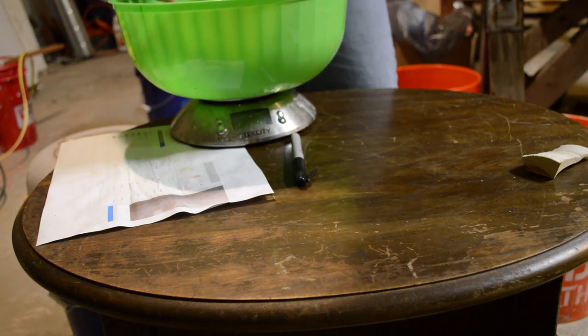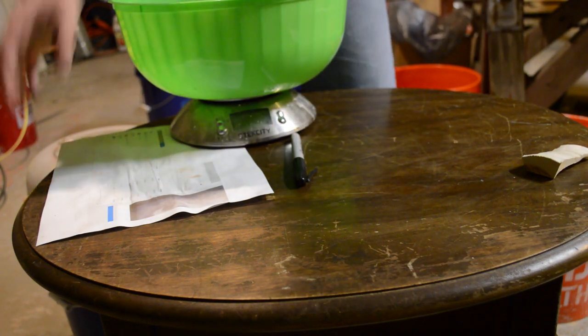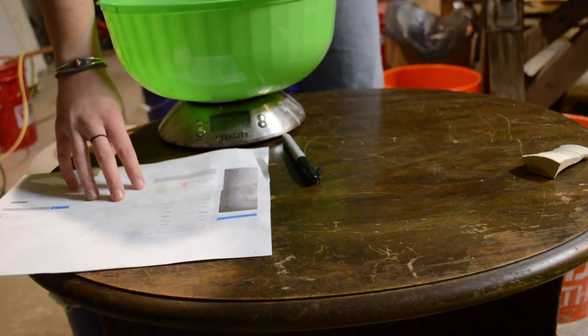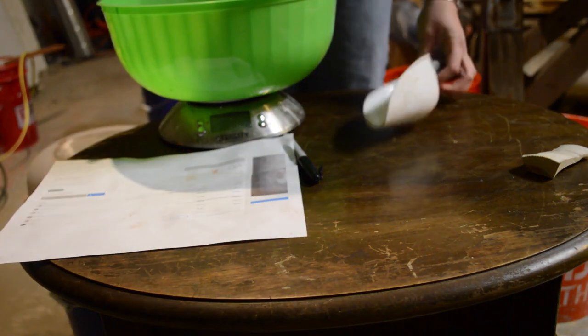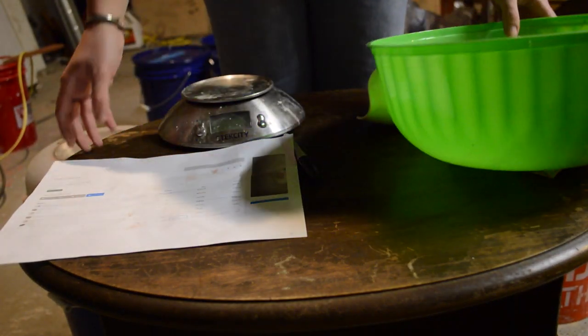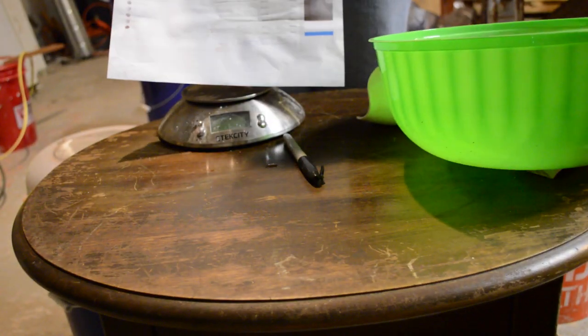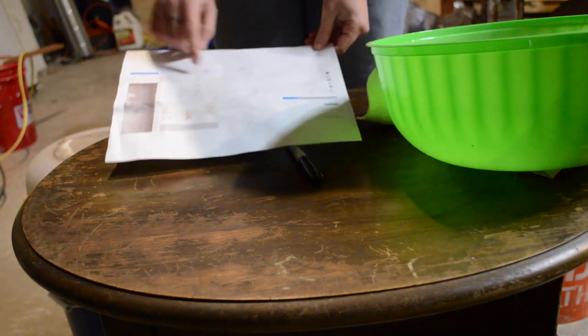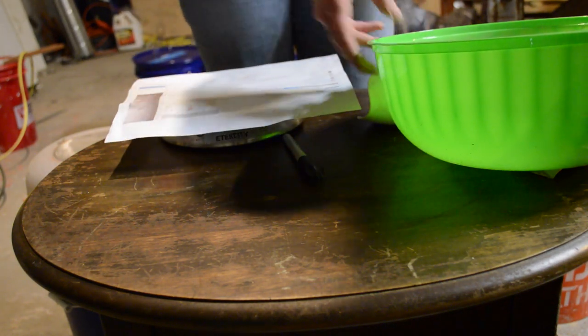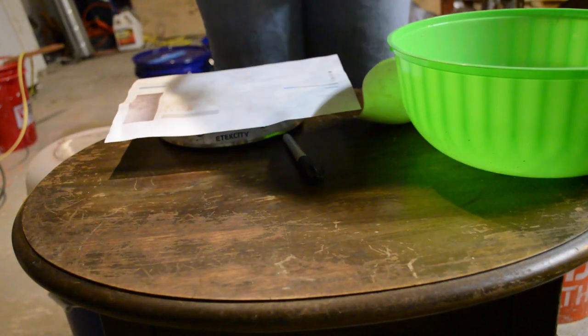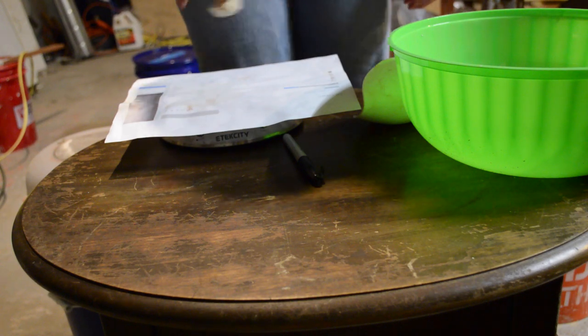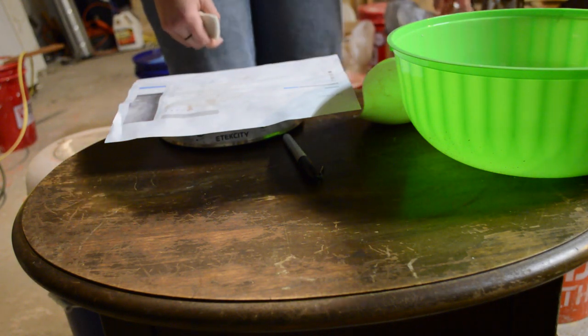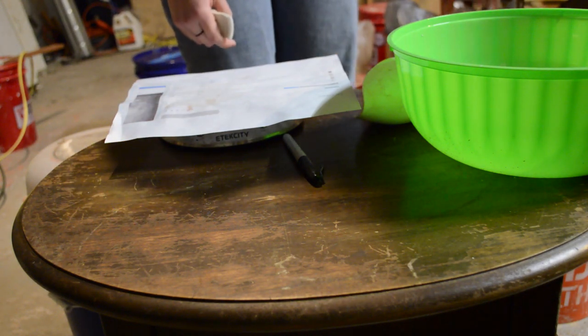Now, dry glaze recipes usually come in 100 gram batches by default. The 100 gram batch I use for making test tiles. And then the rest of the leftover goes into my reclaimed glaze bucket.